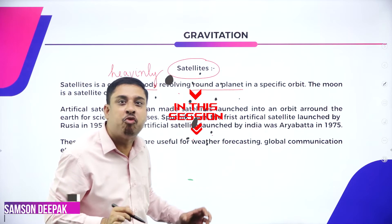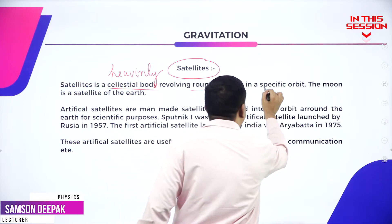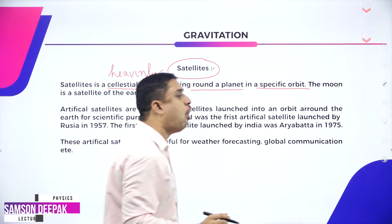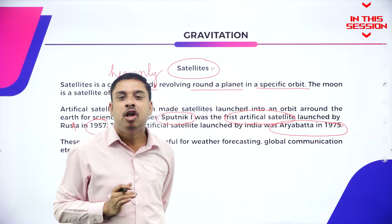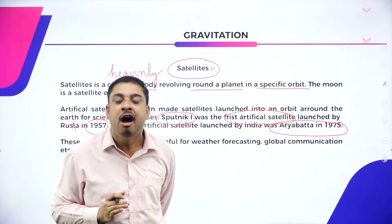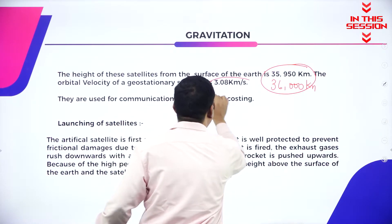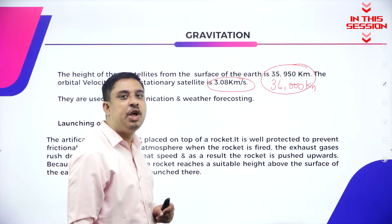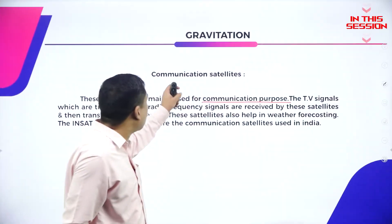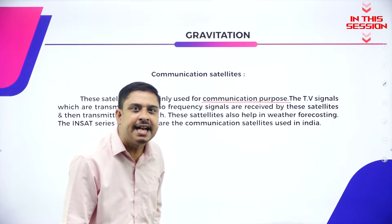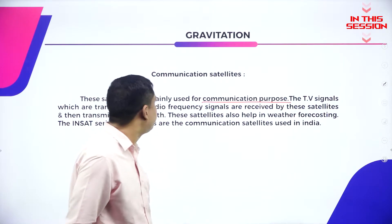A satellite revolves around a planet in a specific orbit. The first artificial satellite launched by India was Aryabhata, and its orbital velocity is 3.08 km per second. Communication satellites are basically used for communication purposes.